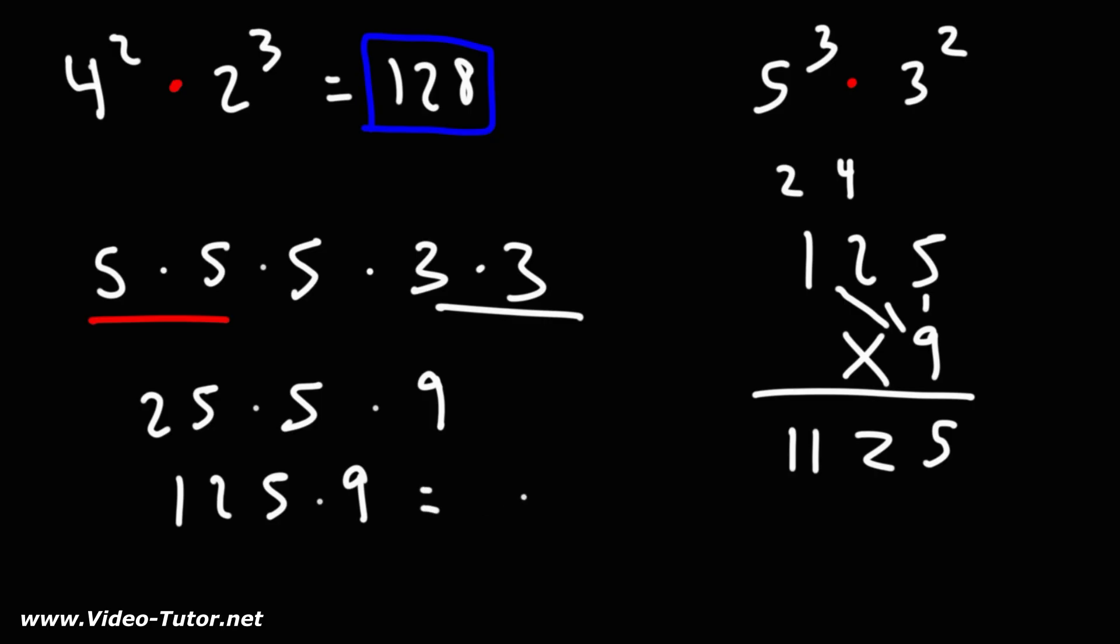So, this is equal to 1125. So, that's the value of 5 to the 3rd times 3 squared.